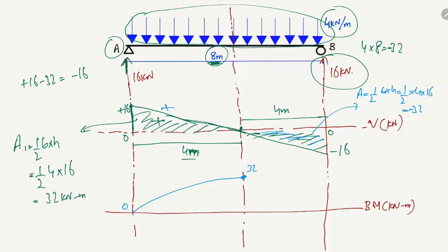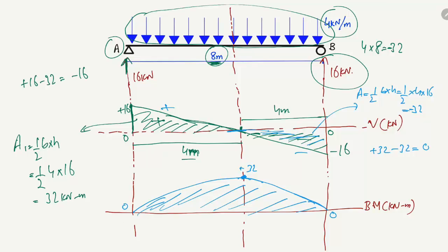The second triangle is below the reference line, so its area is −32 kN·m. Adding +32 and −32 gives 0, confirming the bending moment returns to zero at B. This gives us the bending moment diagram as a parabola — one degree higher than the linear shear force diagram. Hope you understand; don't forget to subscribe for daily civil engineering videos.